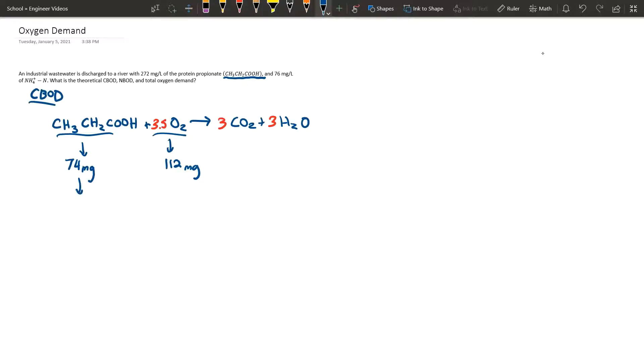So now we want 1 milligram of this element right here. And to get to that, we divide it by 74. So you're going to divide by 74 over here. So 112 divided by 74 is 1.51 milligrams. And so we had 272 milligrams of this compound right here. And to get from there to here, you had to multiply by 272. So we're going to do 1.51 times 272, and that should give us 411.7 milligrams. And that's for our CBOD.